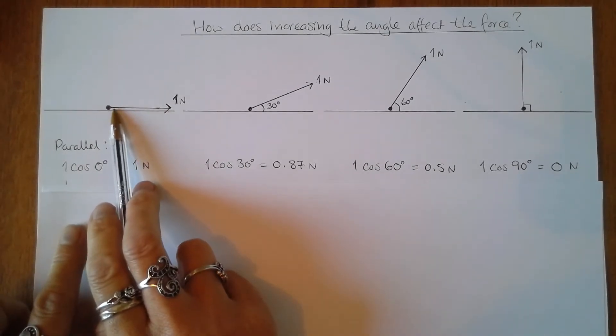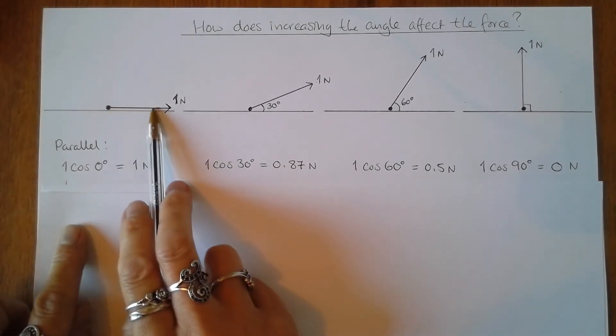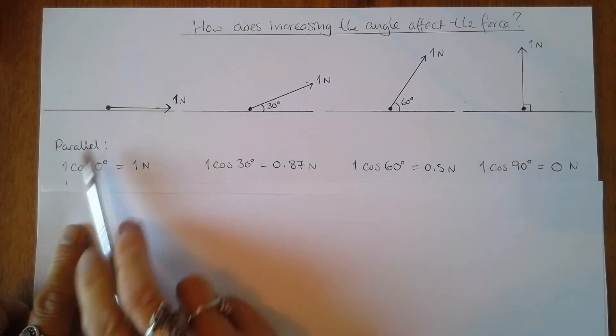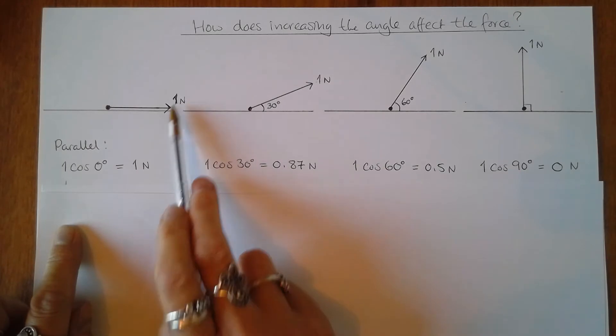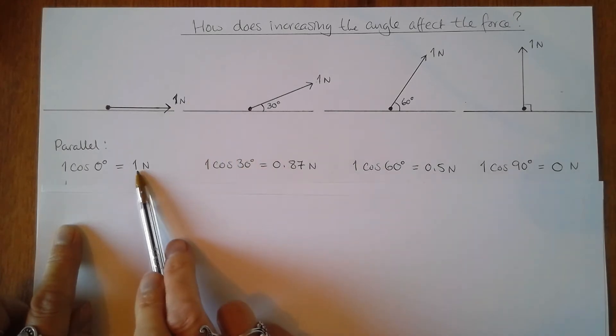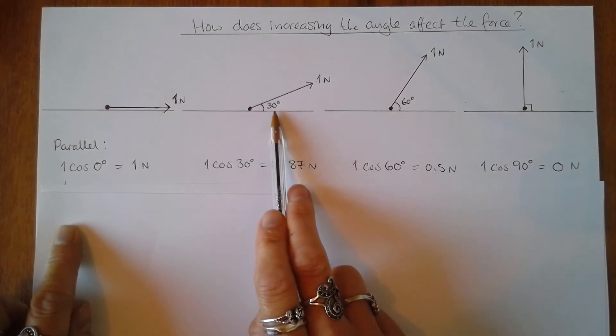If I look at the angle between them, the angle between the surface and the force is zero degrees, one cos zero is equal to one newton. So the full force of one newton is applied in the parallel direction.